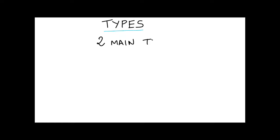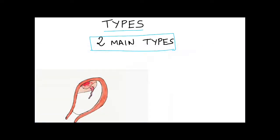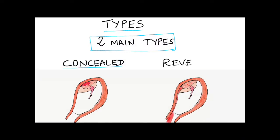There are two main types of abruptio placenta. The first type is concealed type, where the bleeding which occurs inside the uterus does not come out. The blood accumulates inside the uterus and the bleeding is hidden. The other type is revealed type, where the bleeding pours out of the uterine cavity and is revealed to the external environment.